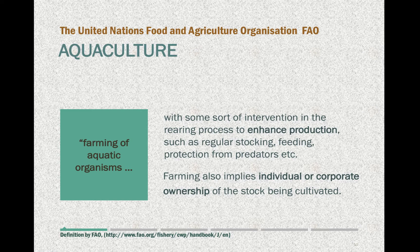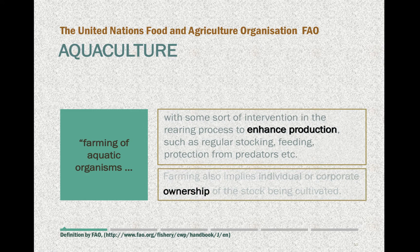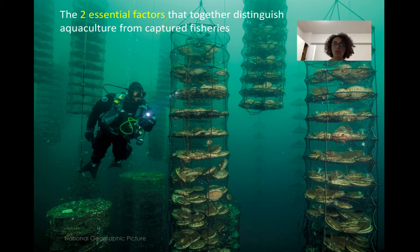This intervention can be stocking, feeding, or protection from predators. One thing that is very important to define — and this is important for the FAO statistics — is that farming also implies individual or corporate ownership of the stock being cultivated. Basically, there are two key points: to enhance production, and there is an owner. These two essential criteria together distinguish aquaculture from fisheries.